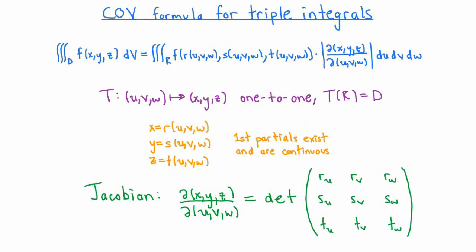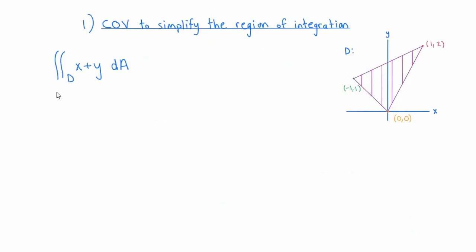Of course there's an exactly analogous formula for triple integrals, and we're going to be using this one as well when we get to our examples about cylindrical and spherical coordinates. For the first example, let's suppose that we're tasked with computing the double integral of x plus y dA over the triangular region D in the plane with vertices at (-1, 1), (0, 0), and (1, 2).